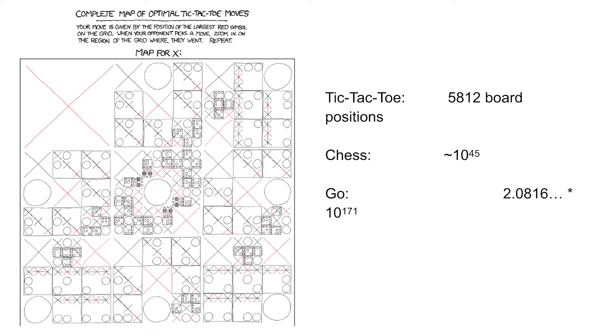As a fun side note, on the slide it's written with so many decimal places for Go because we know the exact number of legal Go board positions, a result that came out in 2016.